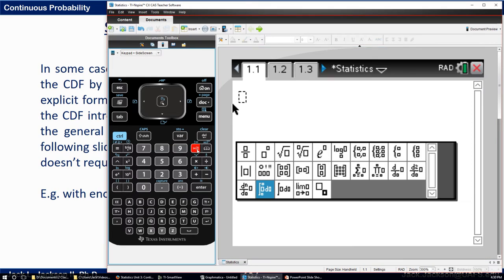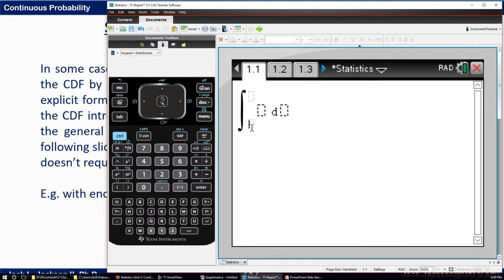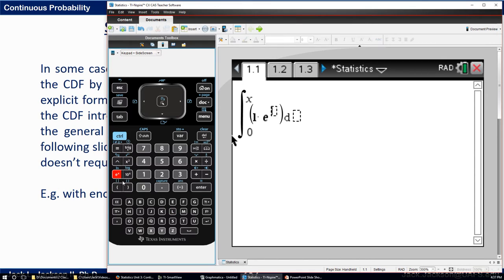I'll show you. You can just tell it to integrate. If this is, if you have the CAS version here, we want to integrate from zero to x. Let me put in, well, I can actually put in a number. Let me just put in L instead of lambda. Lambda times e to the power negative lambda times x dx.